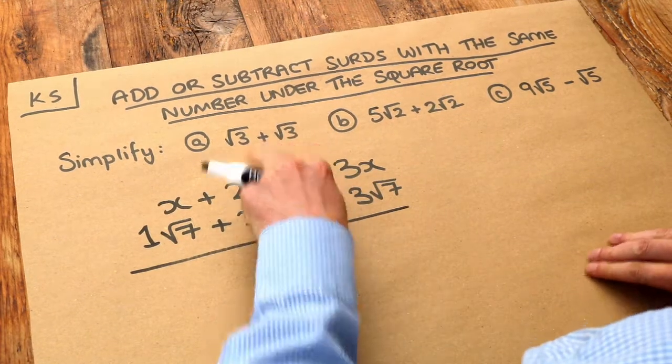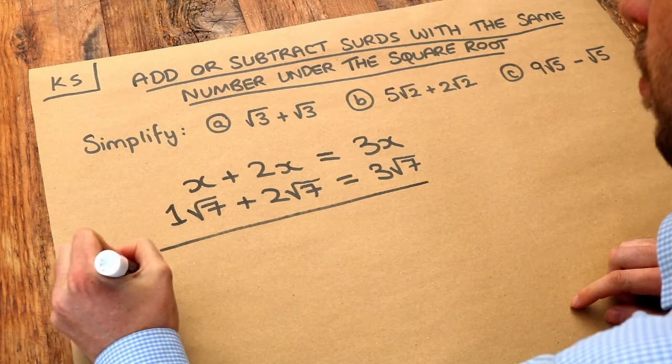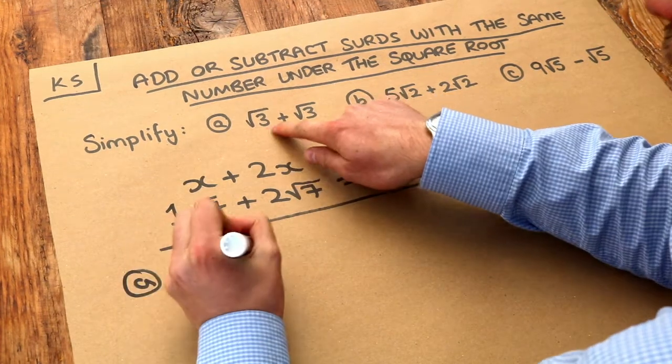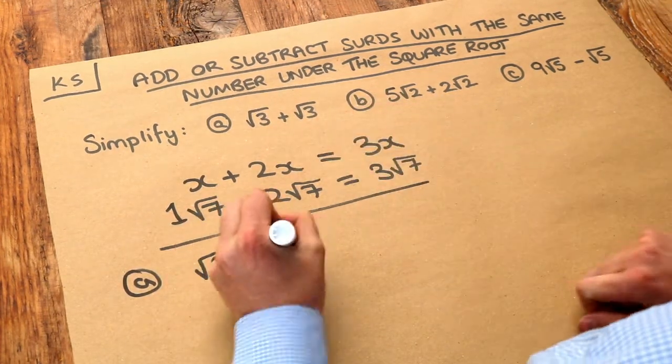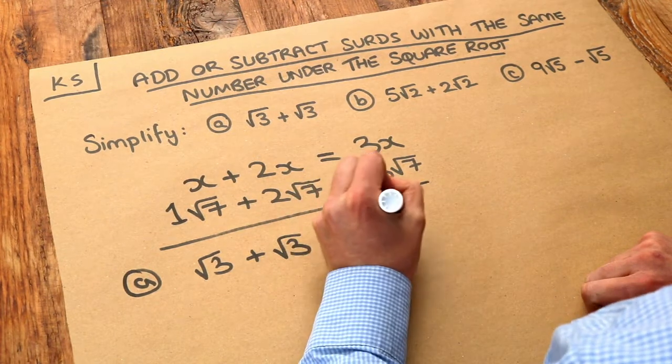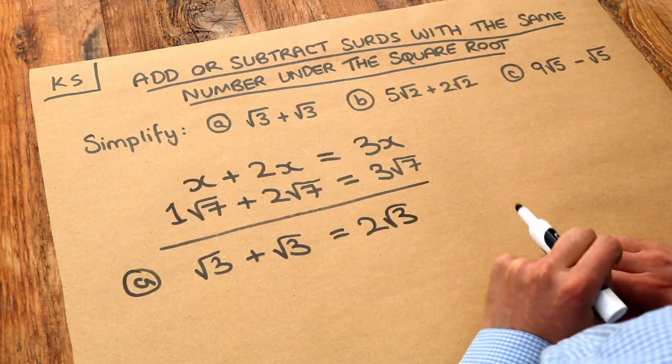So let's use that on these. First one: if we have one lot of root 3 and we add another lot of root 3, then we would have two lots of root 3, which we write as 2 root 3.